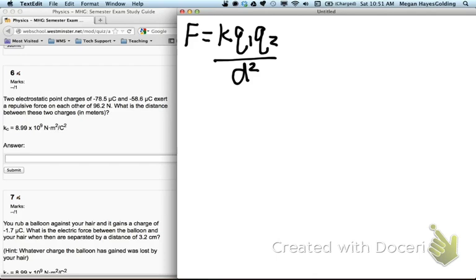Using algebra, I'm going to multiply both sides of my equation by D squared. I get this.